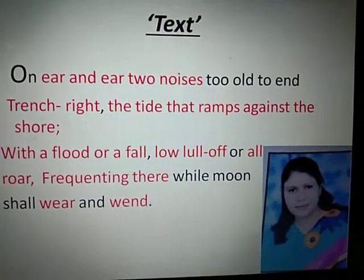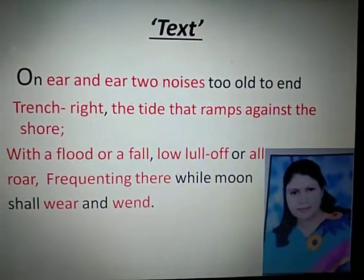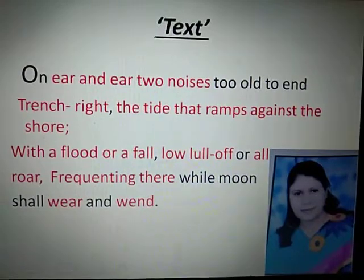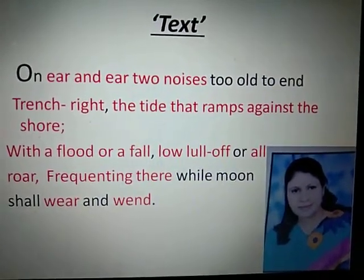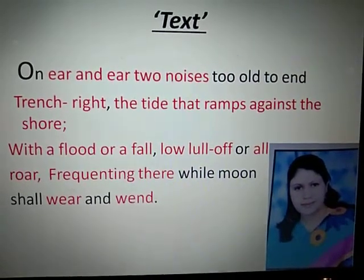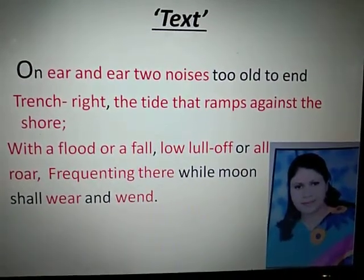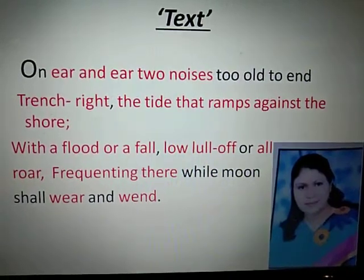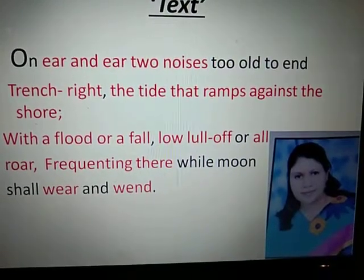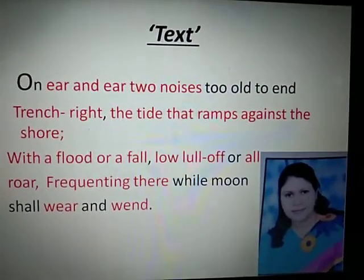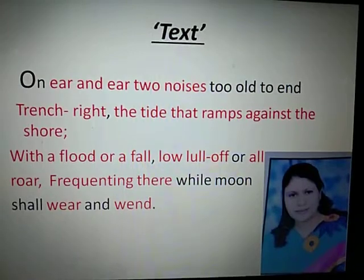First of all, I tell you the word meaning of this poem. 'Year and year' means two years — the two sounds, one of the sea and the other of the skylark, fall on the two ears of the poet. 'Two noises, two old, two and' — it means two noises which have been heard for so long at a time that they may be recorded as everlasting; two immortal noises which will continue forever and forever.